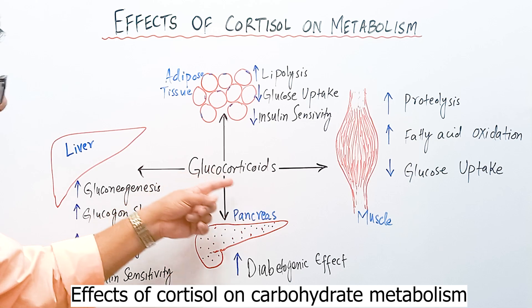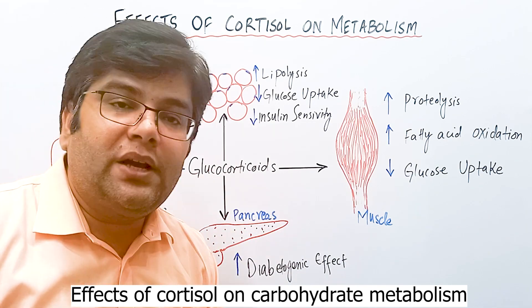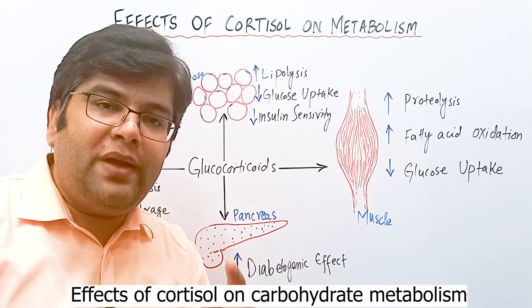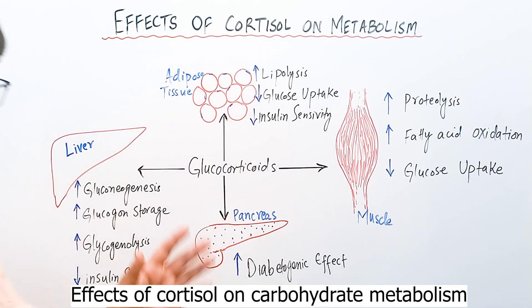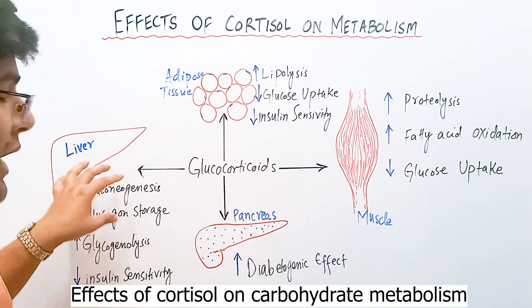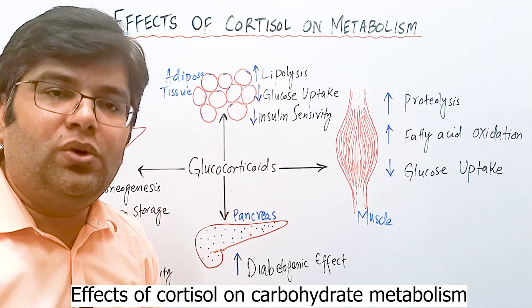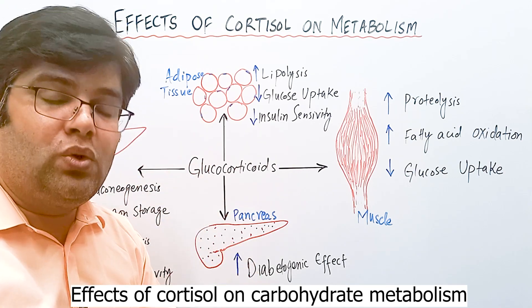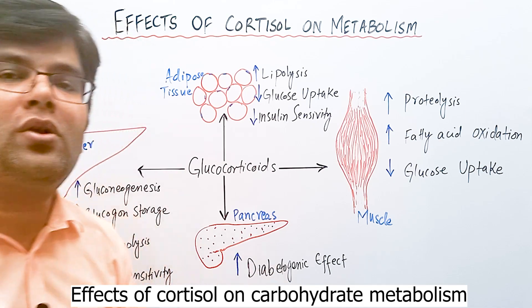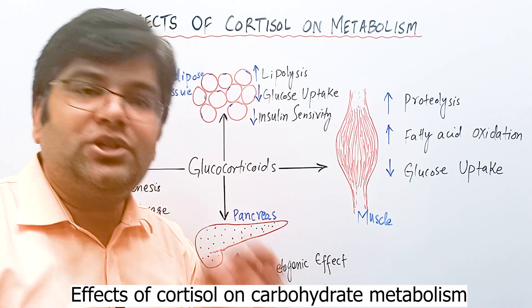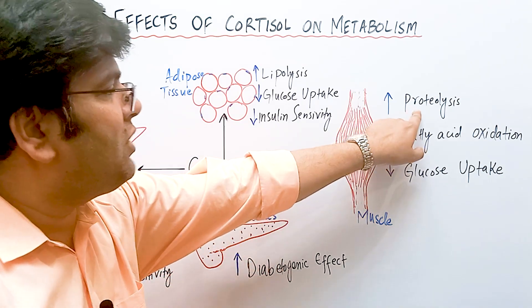This hyperglycemia caused by cortisol is different from the hyperglycemia caused by glucagon. Glucagon mainly causes glycogenolysis — breakdown of stored glycogen in the liver. But cortisol mainly causes gluconeogenesis — synthesis of new glucose from non-carbohydrate substances, especially amino acids coming from protein breakdown.